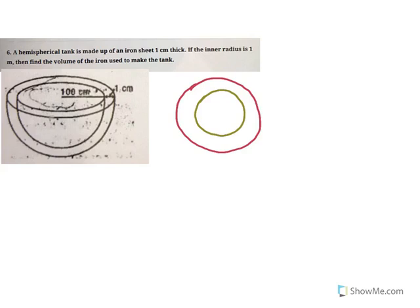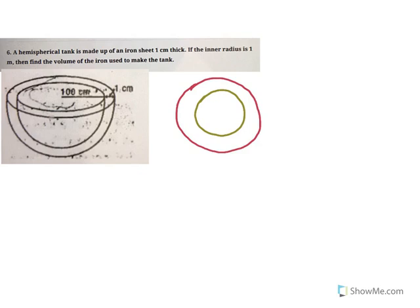A hemispherical tank is made up of an iron sheet one centimeter thick. If the inner radius is 1 meter, find the volume of the sheet used to make the tank. So where is this iron sheet? This is the iron sheet — this thickness — this is the whole iron sheet.